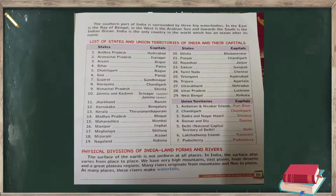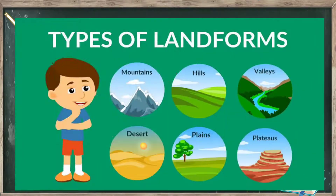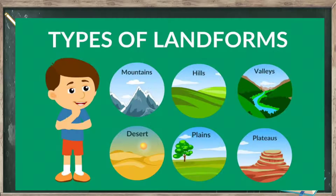Now we will look at the 9 union territories and their capitals. Andaman and Nicobar Islands – Port Blair; Chandigarh – Chandigarh; Dadra and Nagar Haveli – Silvassa; Daman and Diu – Daman; Delhi (National Capital Territory of India) – Delhi.